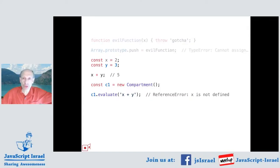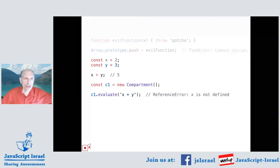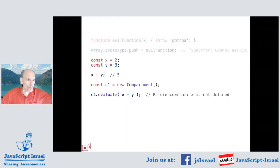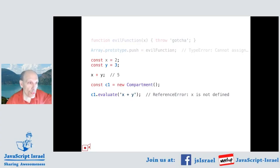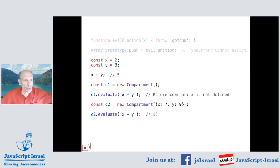So SES introduces an abstraction called the compartment. The compartment creates separate global objects and separate global scopes inside the overall JavaScript system. We run each package in its own compartment, and we endow that compartment with only the globals that that package needs. A compartment C1 that is unendowed with anything gives a reference error when evaluating X plus Y because there are no X and Y globals. C2 is a compartment endowed with global variables X and Y that have a different value, and evaluating X plus Y there gives a result.